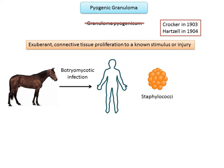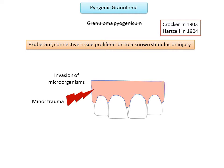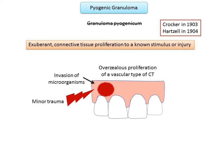Subsequent work suggested that the lesion was due to infection by staphylococci or streptococci. It is now generally agreed, however, that pyogenic granuloma arises as a result of some minor trauma to the tissues, which provides a pathway for the invasion of non-specific types of microorganisms. The tissues respond in a characteristic manner by the overzealous proliferation of a vascular type of connective tissue.